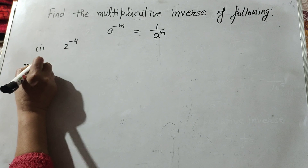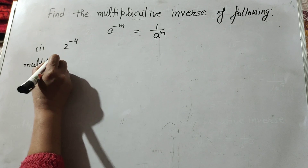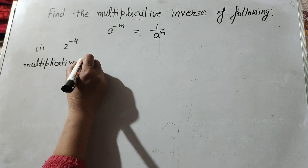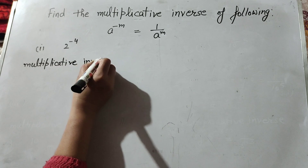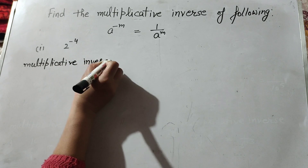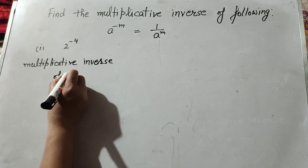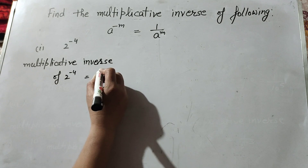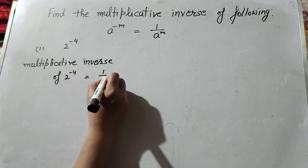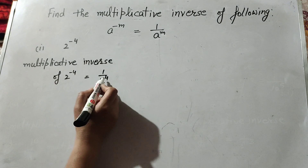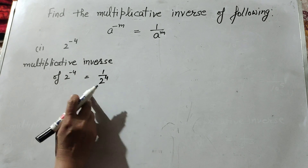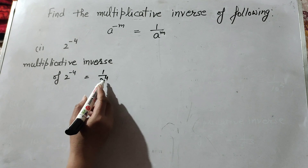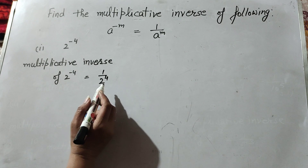The multiplicative inverse of 2 raised to power minus 4 is equal to 1 over 2 raised to power 4. When 2 raised to power minus 4 is multiplied by 2 raised to power 4, we get the answer one.